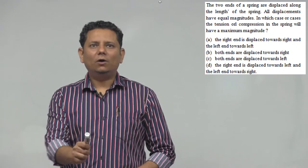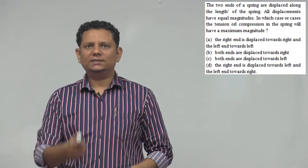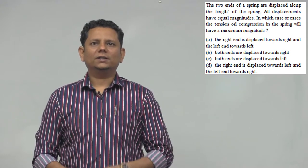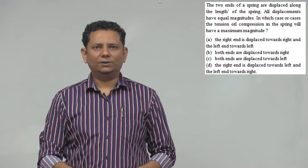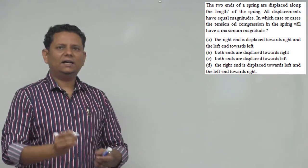The next question says: the two ends of a spring are displaced along the length of the spring. All displacements have equal magnitude. In which case or cases will the tension or compression in the spring have maximum magnitude? We have four options. Now, this is a very easy question.